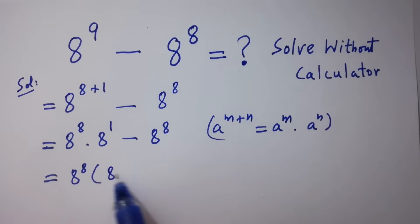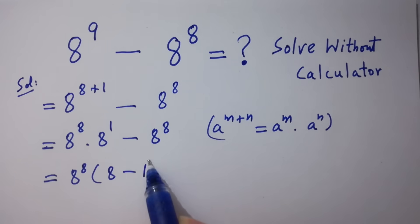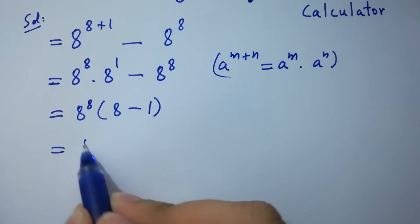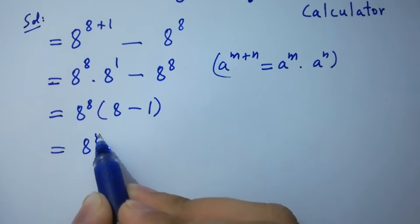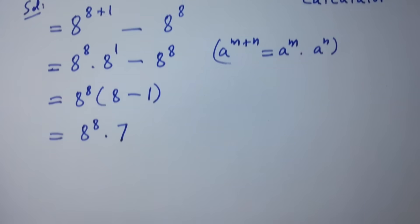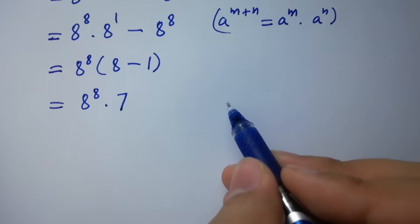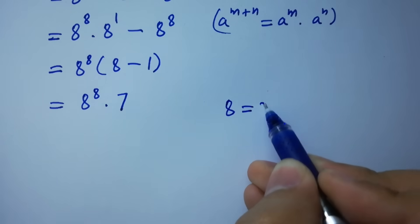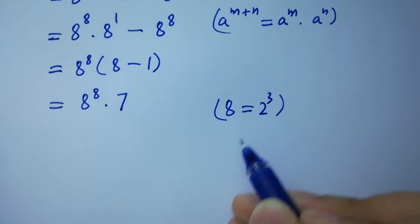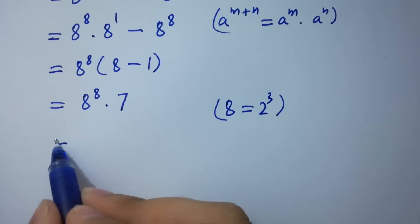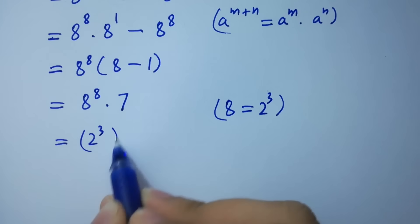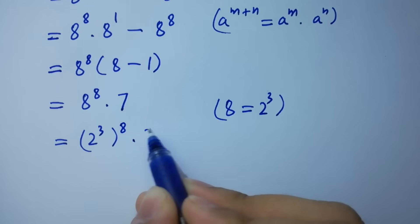We have here 8 minus 1. So 8 to the power 8 times 8 minus 1 is 7. As 8 equals 2 cubed — 2 times 2 is 4, 4 times 2 is 8 — we have here 2 cubed to the power 8, times 7.